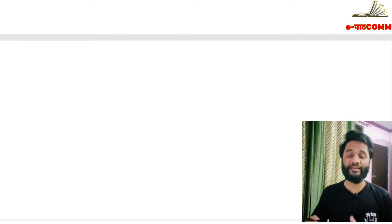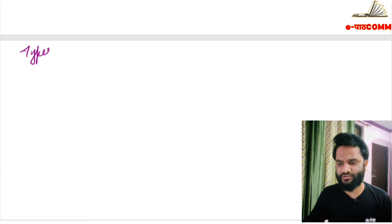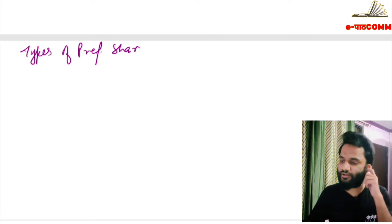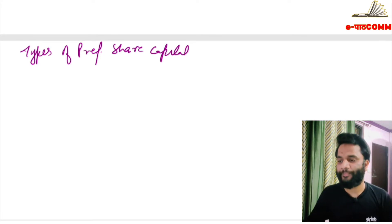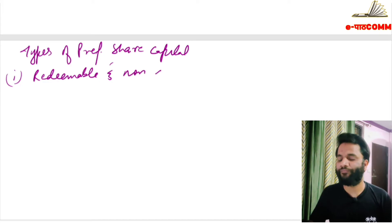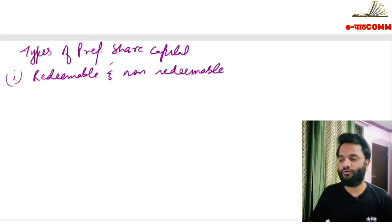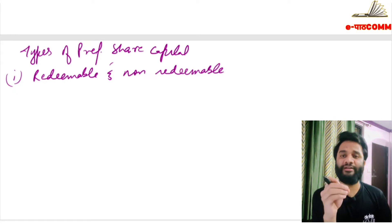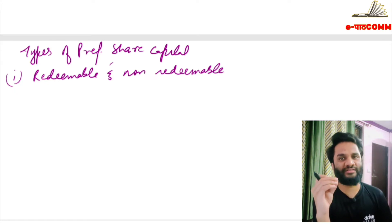Now we will see the types of preference shares. The first type is redeemable and non-redeemable preference shares. Redeemable preference shares are those which are to be redeemed after the expiry of a stipulated time period — for example, if preference shares were issued for 10 years, after 10 years the company must redeem them.